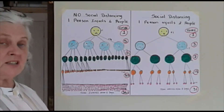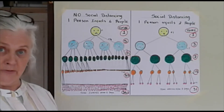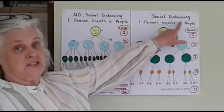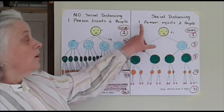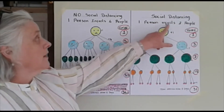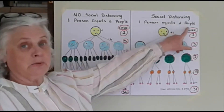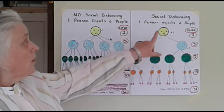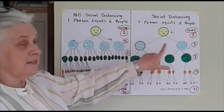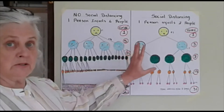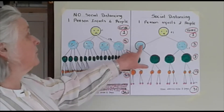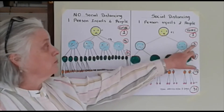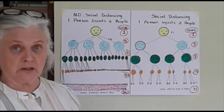So this is how we're going to flatten the curve — let's look at what social distancing does. Now we've got one person and they're going to infect two people. Day one: he's sick, he keeps the rules, so he only infects two people, and now on day two we have a running total of three.